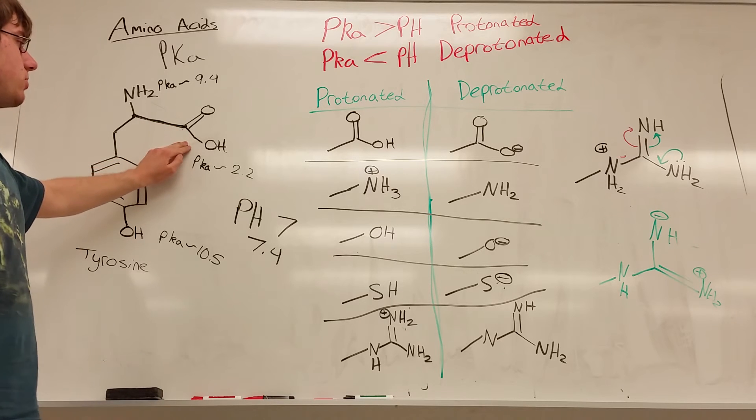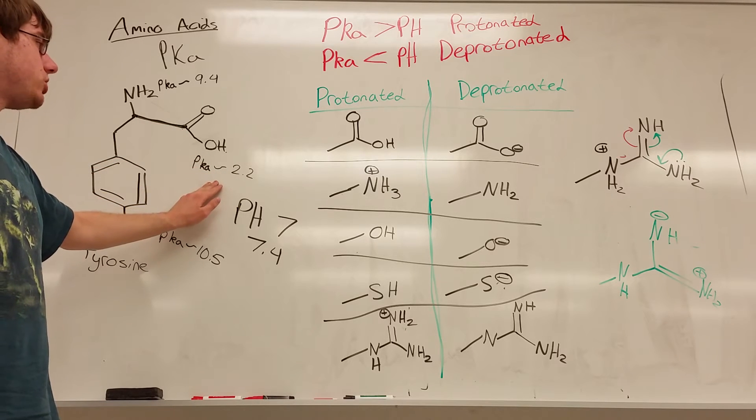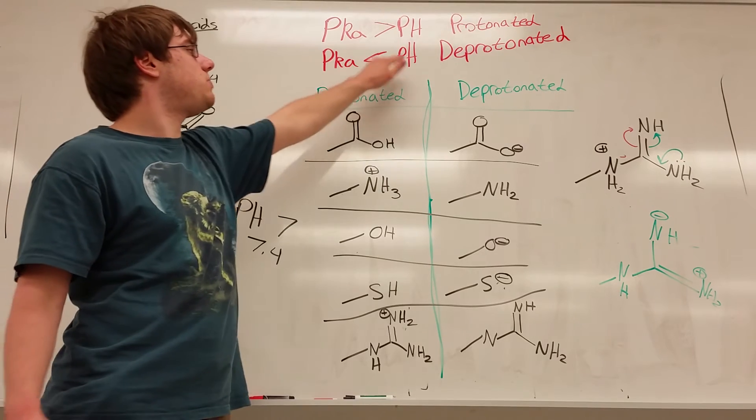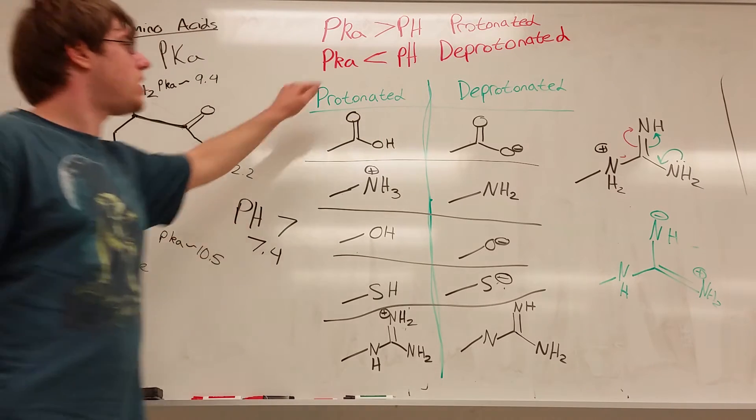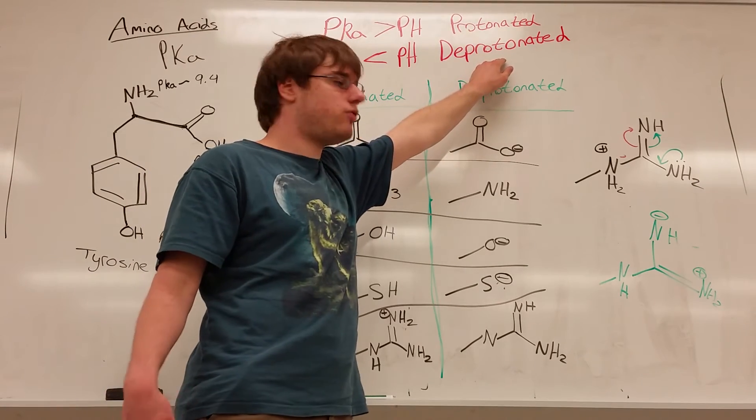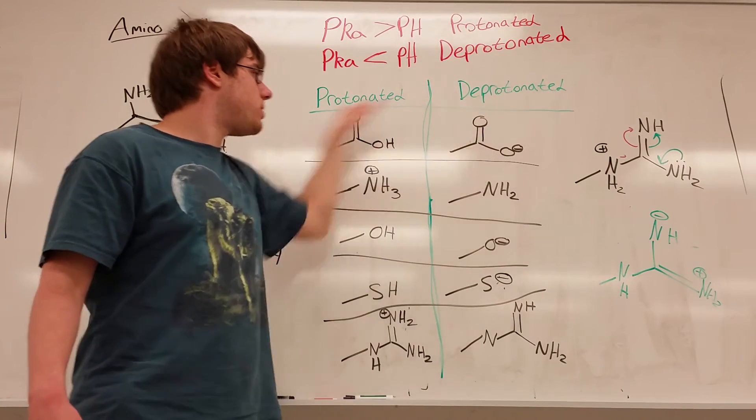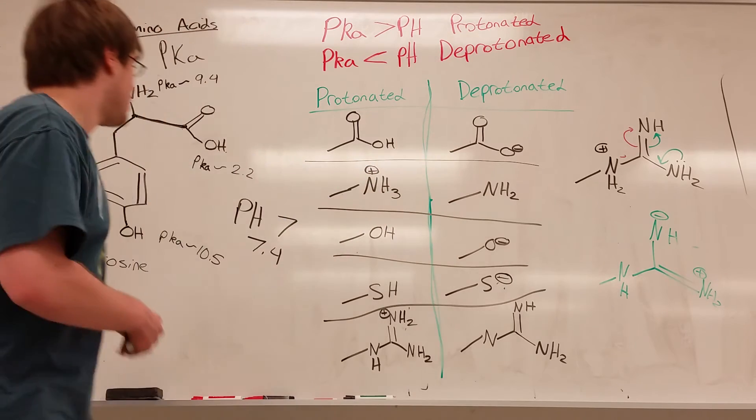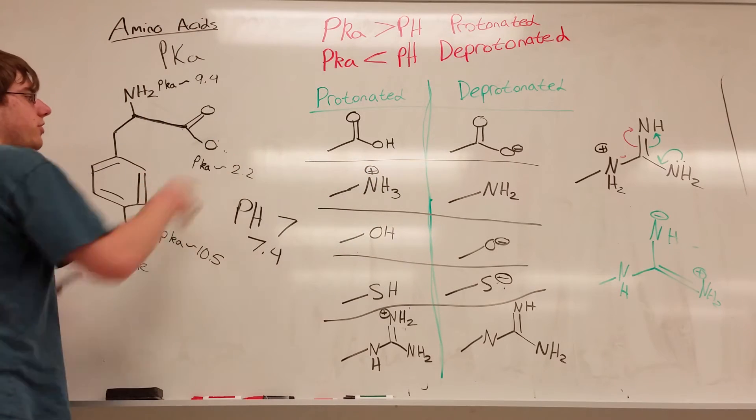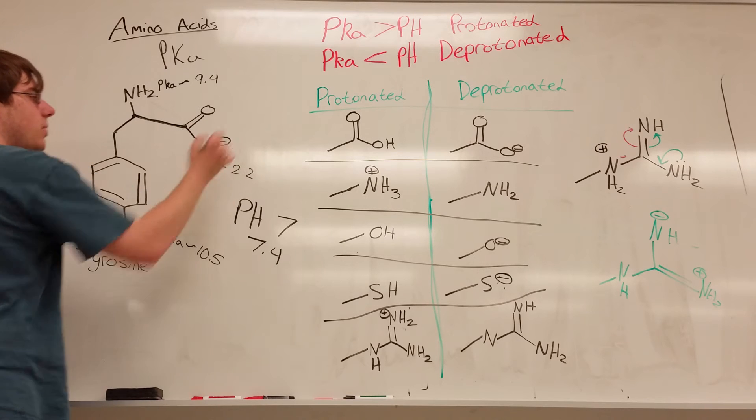So look at each individual functional group one by one. Starting with the carboxylic acid group, we have a pKa of 2.2. 2.2 is less than pH because pH is 7, so 2.2 is less than 7. So that means it must be in its deprotonated form. Its deprotonated form, based on this chart, is the carboxylate, the O-. So all you have to do is say, okay, well, my final structure in that pH, this should be O- like that.